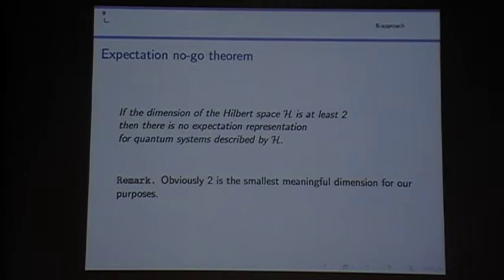So here is the optimized expectation no-go theorem. If the dimension of the Hilbert space is at least 2, you cannot get lower than that. Then there is no expectation representation for the quantum system or for the appropriate quantum system.